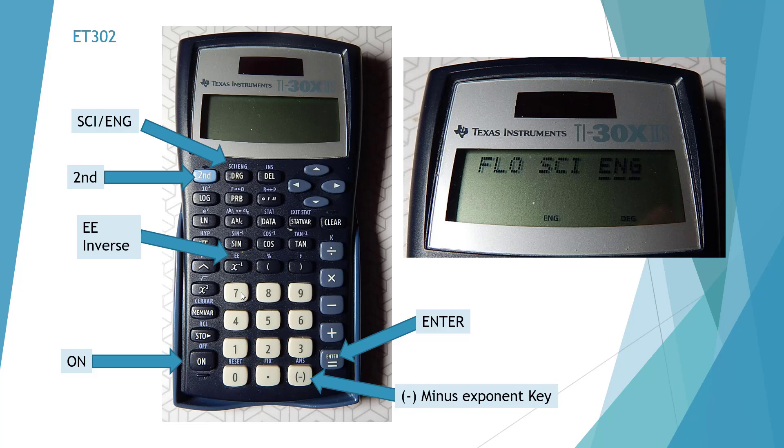...and we have to push our second key and then we're going to use our EE button. All right, and that's going to give us our exponent 10 to some certain power.